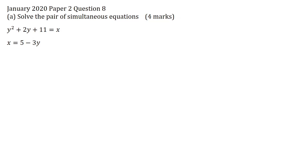In this video, I'll be solving January 2020, Paper 2, Question 8, Part A: solve the pair of simultaneous equations for 4 marks. I'm going to call this equation here equation 1, and I'll call this equation here equation 2. I will substitute equation 2 into equation 1.